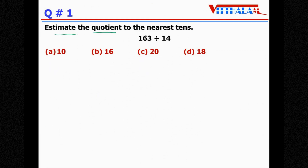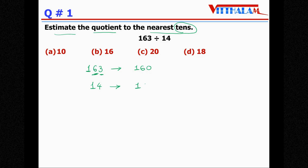Let's solve one by one. First section: Mathematical Reasoning. Question Number 1: Estimate the quotient to the nearest tens of 163 divided by 14. When we want to estimate the quotient to the nearest tens, the dividend and divisor have to be first estimated to the nearest tens. So for 163, we estimate to the nearest tens.